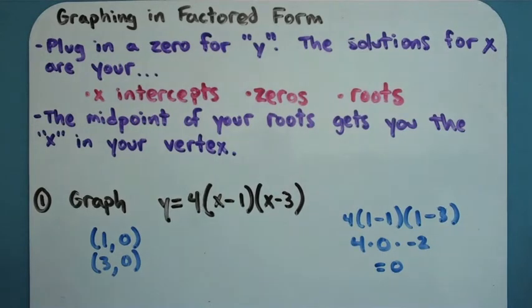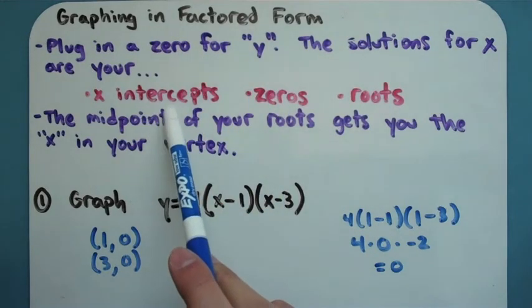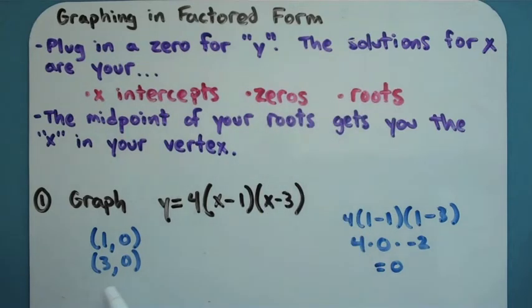And there's actually two other names for these points that you'll use a lot more in more advanced classes. You've got to know all three. They're called x-intercepts, they're also called zeros and roots. All of those mean the same thing. They're talking about these points on a graph.